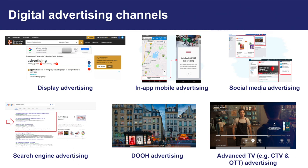Now let's look at the main digital advertising channels. First, we have display advertising — also known as web advertising — which refers to advertisements displayed in web browsers on desktops, laptops, and mobile devices. Then we have mobile app or in-app mobile advertising, which relates to displaying ads inside mobile apps on smartphones and tablets. Next, we have social media advertising: popular social media sites like Facebook, Twitter, LinkedIn, and Instagram utilize native advertising where ads appear in and next to news feeds, making them look like organic content. Next, we have digital out-of-home advertising, which is the digitalized version of out-of-home advertising — referring to advertisements displayed on billboards, street furniture, and on taxis, buses, and subway walls.